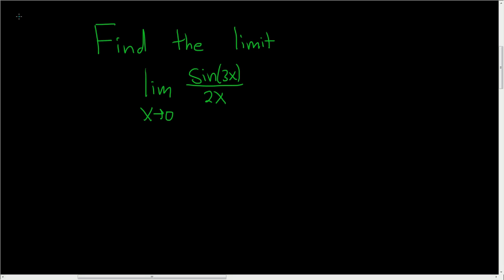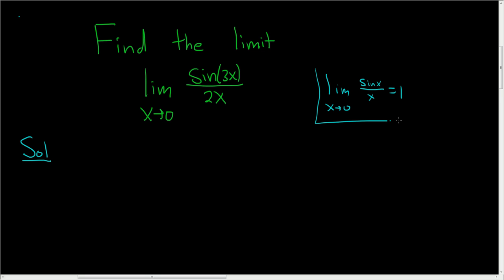Find the limit as x approaches 0 of sine 3x over 2x. The goal is to write it in a way that lets us use this limit: the limit as x approaches 0 of sine x over x equals 1. So we want to rewrite what we have in this form. Let's go ahead and carefully do that.